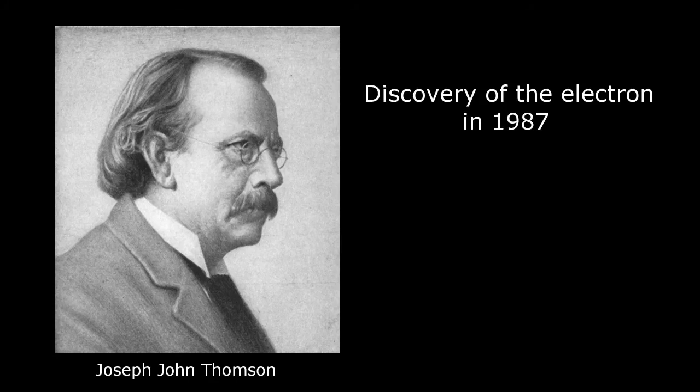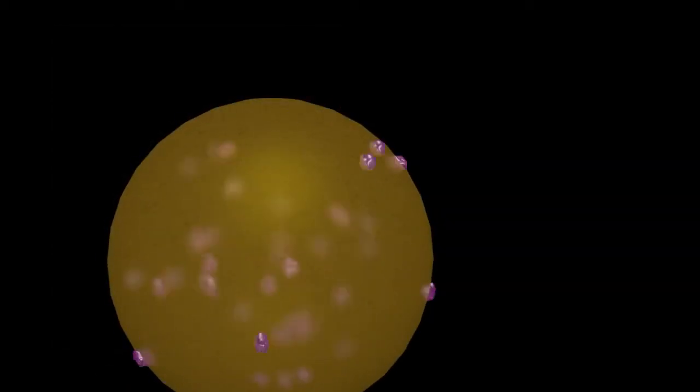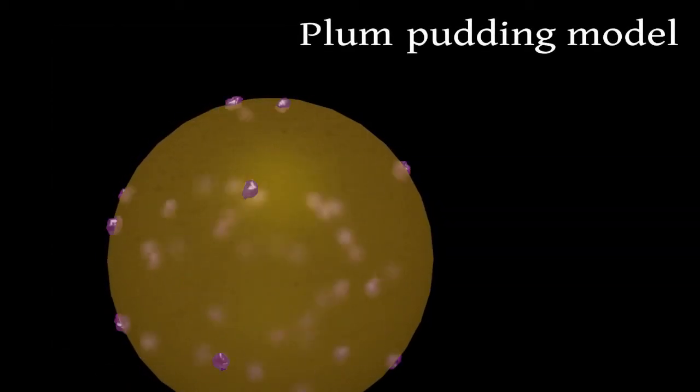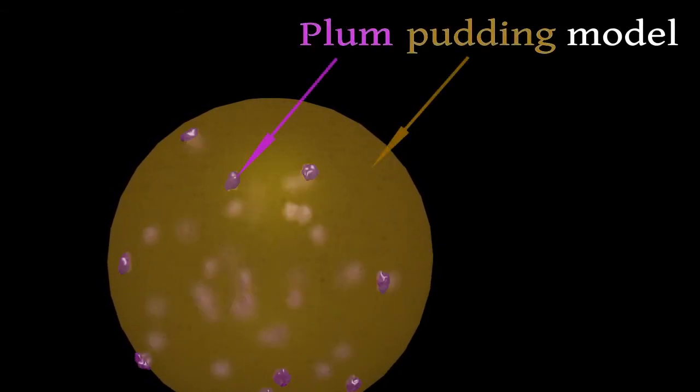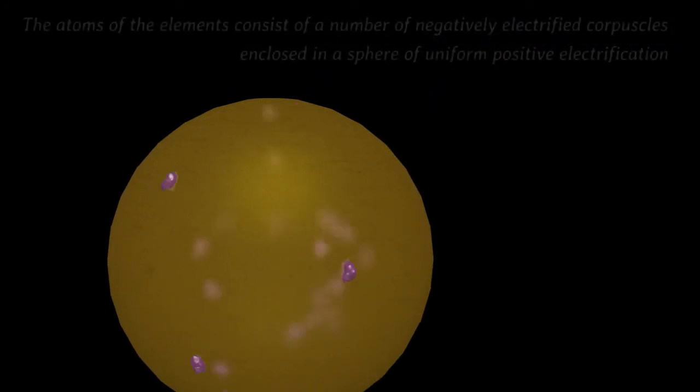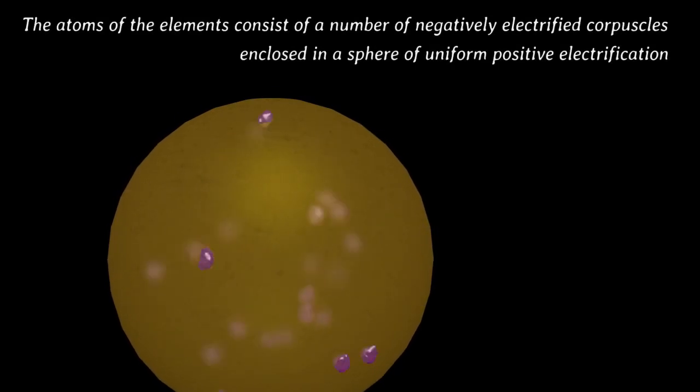At the beginning of the 20th century, the most popular model of the atom was Thomson's model, who discovered the electron, or the so-called plum pudding model. The direct formulation of Thomson is the following: The atom can be imagined as pudding with positive charge and plums as electrons. The atoms of the elements consist of a number of negatively electrified corpuscles enclosed in a sphere of uniform positive electrification.